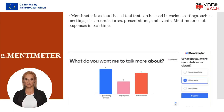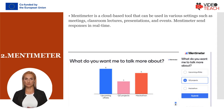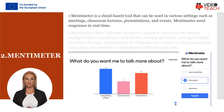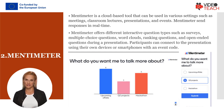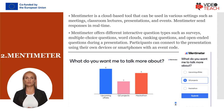Mentimeter is an interactive presentation and cloud-based tool that can be used in various settings, such as meetings, classroom lectures, presentations, and events. Mentimeter allows participants to send their responses in real-time, and the presenter can instantly visualize these responses. It offers different interactive question types such as surveys, multiple-choice questions, word clouds, ranking questions, and open-ended questions.